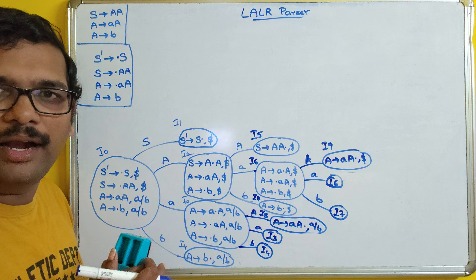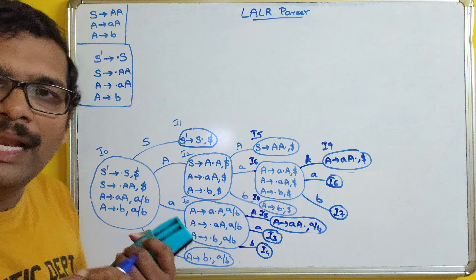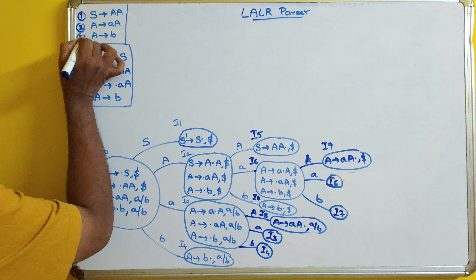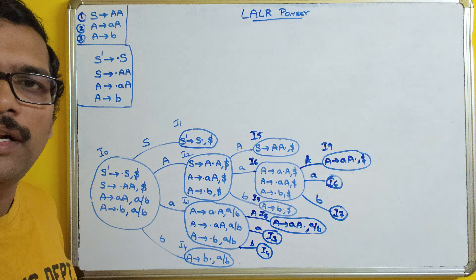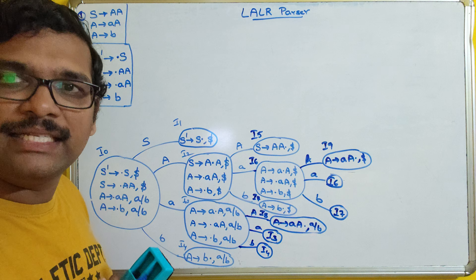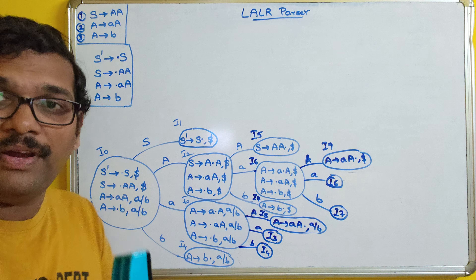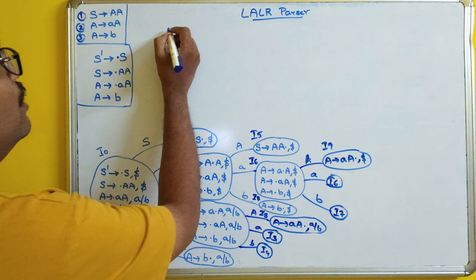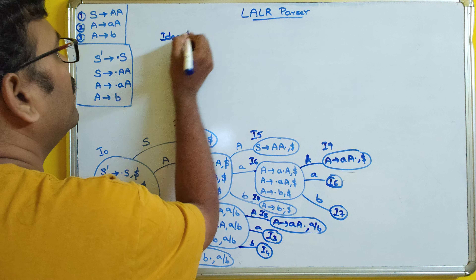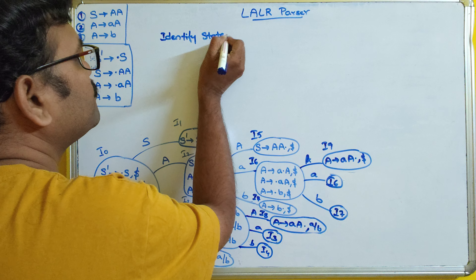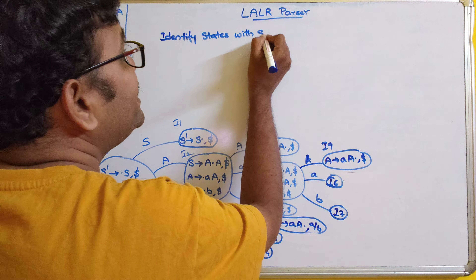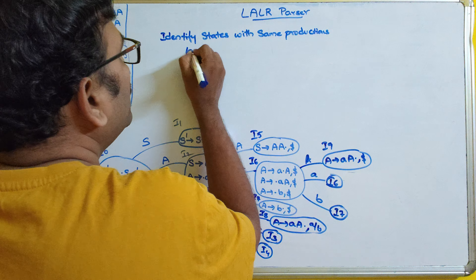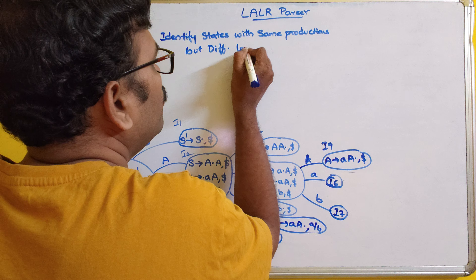These are all the LR(1) items with look-ahead. The next step is to give numbering to the productions: production 1, production 2, and production 3. Now before creating the parsing table, we identify the states which have same productions but different look-ahead symbols.